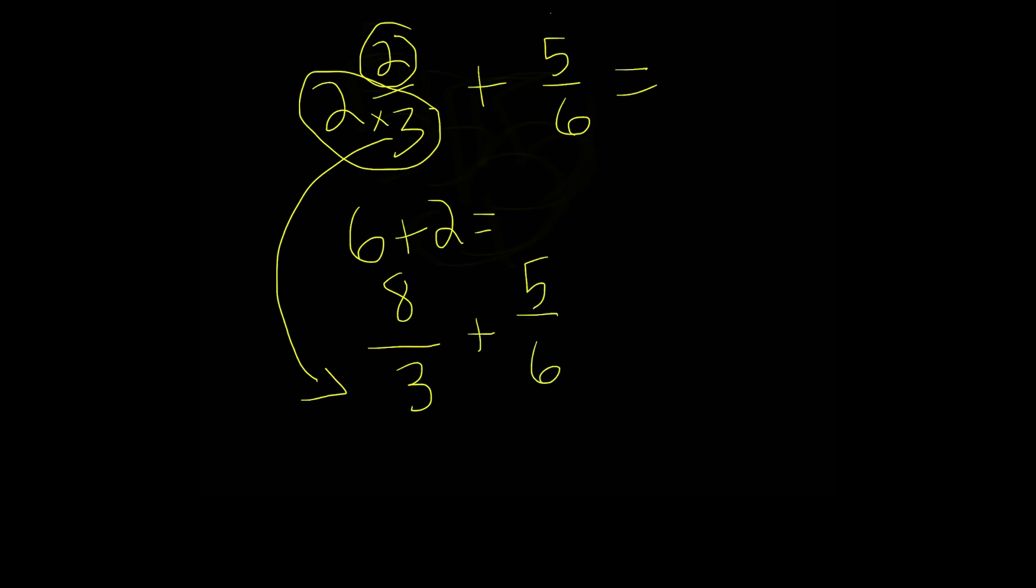And now we add these like normal. We do three times six, that's 18. Eight times six is 48, plus five times three is 15. This is equal to 63 over 18.